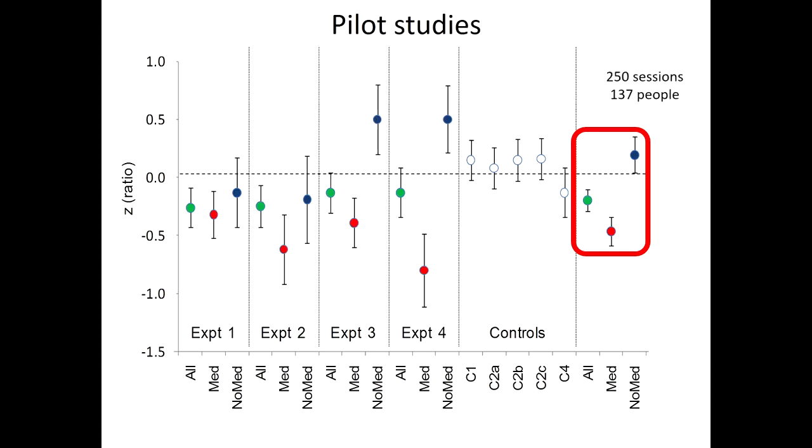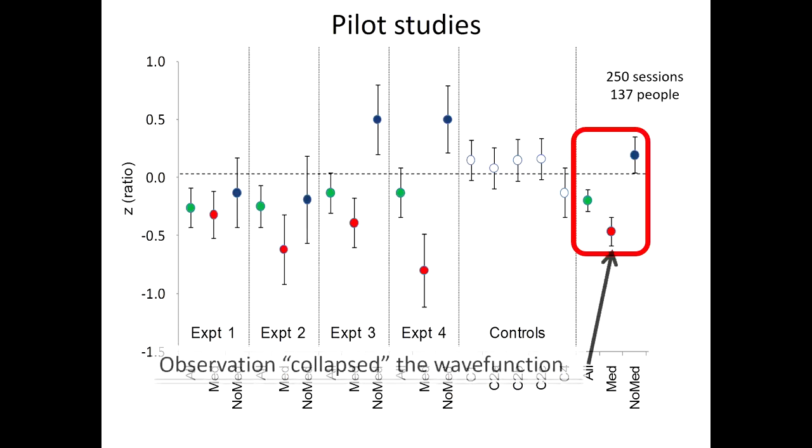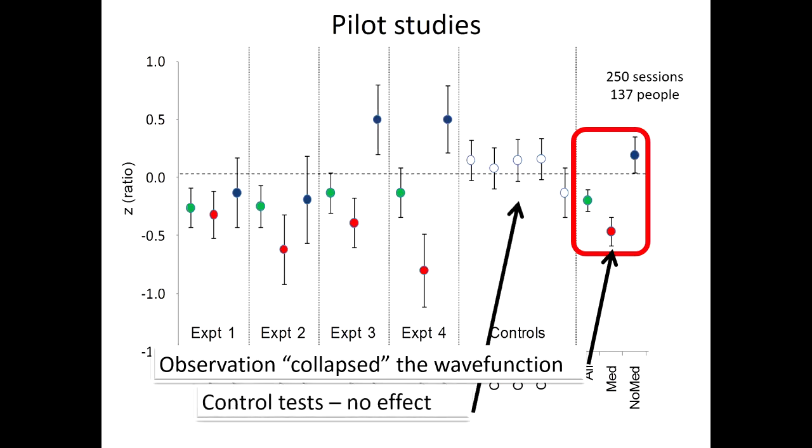So the overall result of the pilot studies was this. You see again, overall, it had a pretty nice effect. Meditators did quite well. Non-meditators overall got actually close to chance. And we ran the same system, and this was 250 20-minute sessions, 137 people. And we ran the same system again and again as controls, which are the white dots. And we don't see any artifacts within the hardware or software or analytics that would suggest that there's some kind of bias in the system. So here it looks like observation was collapsing the wave function. At least the meditators could do that. And the control tests, we don't see any effect.